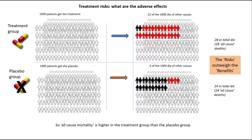Now it's important to note that we should really be doing this analysis for each different type of population. For example, there might be categories of people, such as in particular age groups or particular stages of disease, for whom the benefits outweigh the risks. Either way, the method enables us to make informed decisions about who should and should not take the treatment.